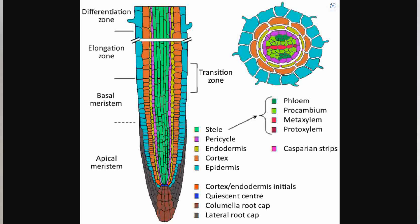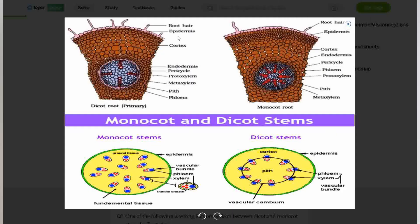Having looked at the internal structure of a dicot root, let us consider the comparison between the monocot root and the dicot root. Primarily they look very similar, except for the arrangement within the endodermis. If you are going inward, you have the root hair, the epidermis, the cortex, the endodermis, you have the pericycle, you have the protoxylem, you have the metaxylem, you have the pith, and you have the phloem.